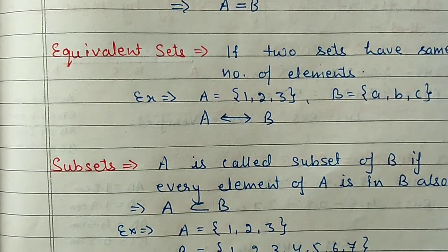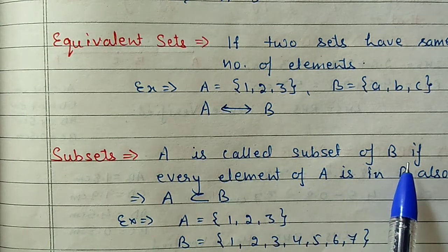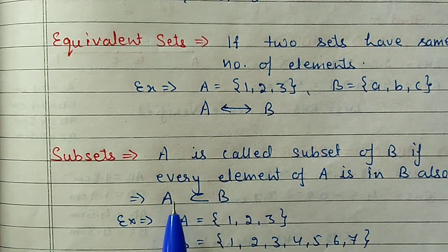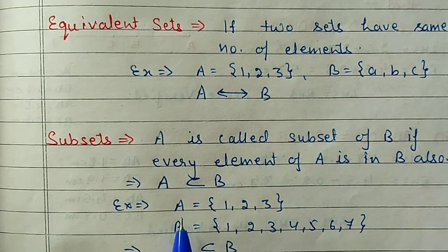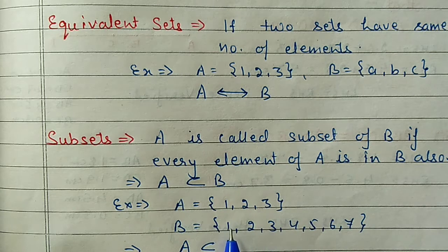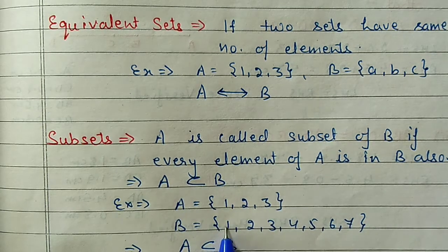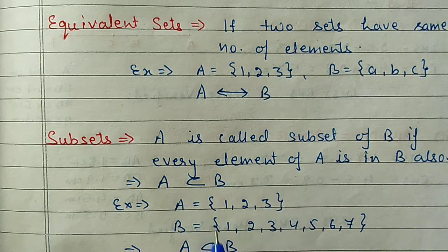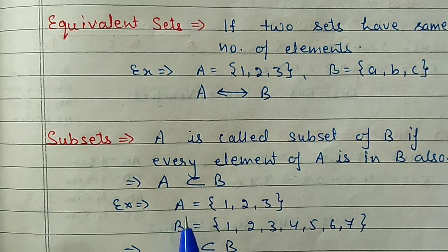Next is the subset. A is called the subset of B if every element of A is in B. If A = {1, 2, 3} and B = {1, 2, 3, 4, 5, 6}, then every element of A - 1, 2, 3 - is present in B. So A is the subset of B, and we call B the superset of A. We write A ⊆ B.